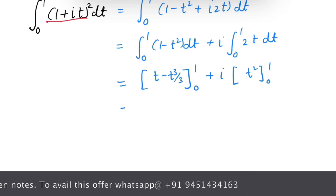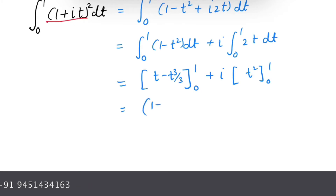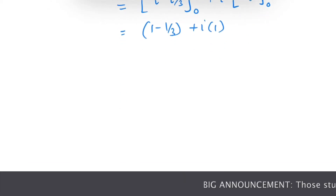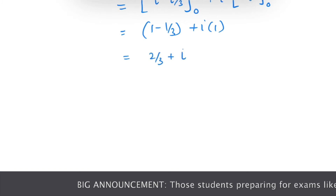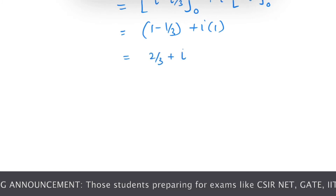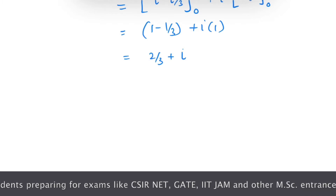Now let's put in the limits. After substituting, we get (1 − 1/3) + i·(1), which gives us 2/3 + i. I hope this problem has cleared your concept of complex integration.